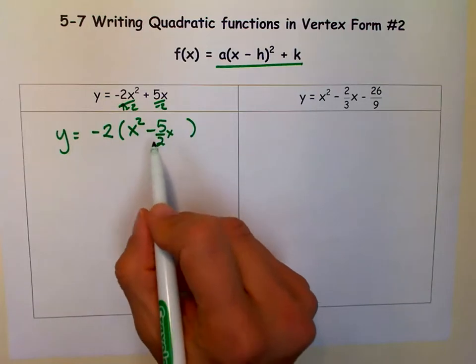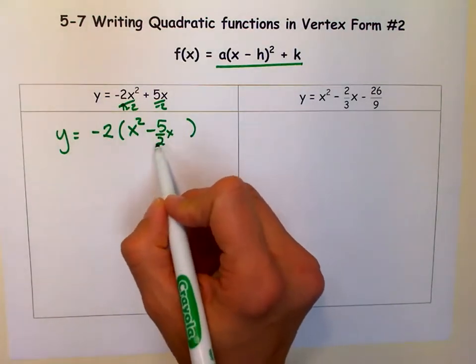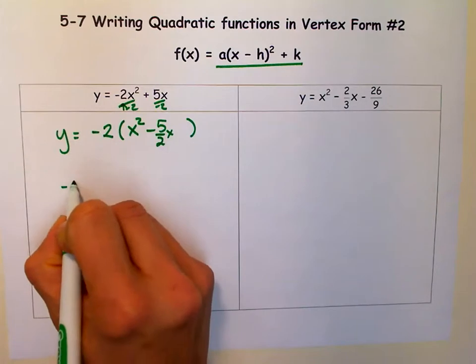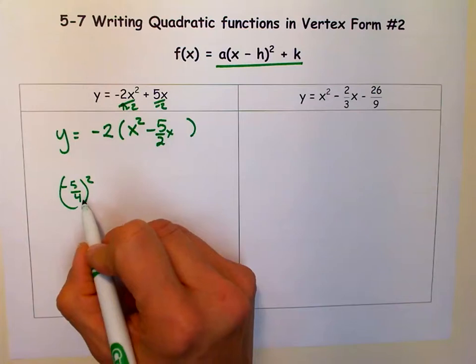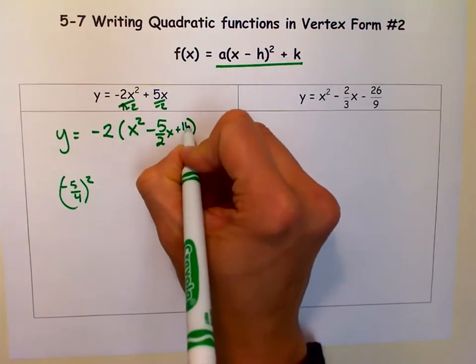So the next step is to take half of b, well, half of this is negative 5 fourths, and then square it, which is 25 sixteenths, and we're going to add it here.